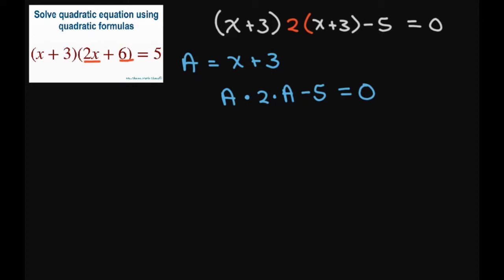And from there this is going to give you 2A squared, and then we'll go ahead and just move this 5 back over here, and divide both sides by 2, so you get A squared equals 5 divided by 2.